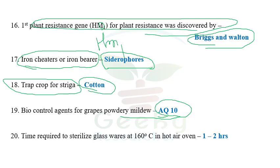The next question: time required to sterilize glassware at 160°C in a hot air oven. In the hot air oven, the time required at 160°C is one to two hours. At 180°C it may take 9 to 15 minutes according to Wikipedia. At 160°C it takes one to two hours. The temperature is very important — at 120°C or 140°C it takes 6 to 10 hours. Make sure you note what temperature is given and choose the answer accordingly. At 160°C, the hot air oven requires 1 to 2 hours to sterilize glassware.